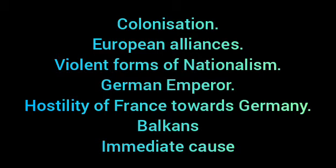The Anglo-Japanese alliance induced France to make an alliance with Britain to solve colonial disputes over Morocco and Egypt. This resulted in the Entente Cordiale in 1904. The Triple Entente of Britain, France, and Russia was formed in 1907. The Triple Alliance — Italy, Germany, and Austria-Hungary — was formed in 1882.